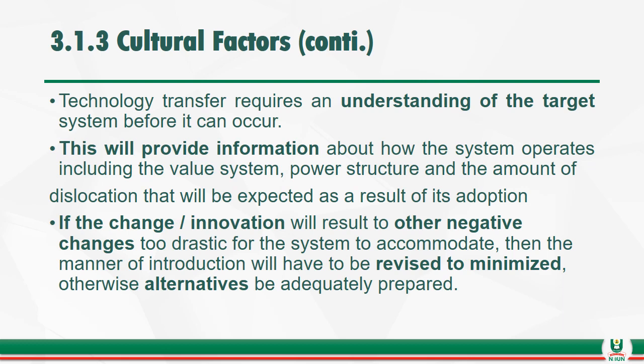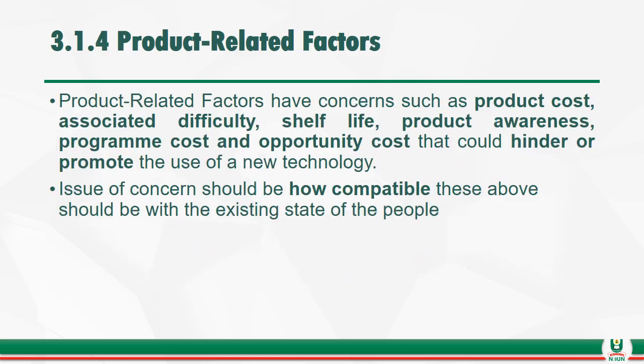Where cultural factors exist as barriers, there is a need for the extension agent or change agent to know what to do or seek alternative measures. Product-related factors are those factors that have to do with the product itself that the extension agent wants to impact on the people. The factors that stand as barriers could be the product cost, the associated difficulty in implementing the technology, the shelf life (that is the storage life), the product awareness program cost, and the opportunity cost. Where these barriers are not present, the technology can go forward.